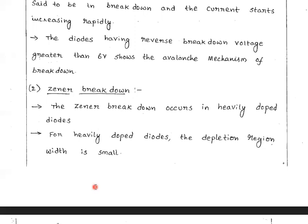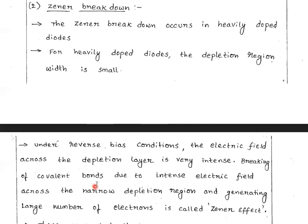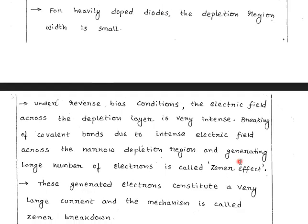Now let us see Zener breakdown. Zener breakdown occurs in heavily doped diodes, whereas avalanche breakdown occurs in lightly doped diodes. For heavily doped diodes, the depletion region width is small under reverse bias condition. The electric field across the depletion region is very intense, causing breaking of covalent bonds due to the intense electric field across the narrow depletion region.